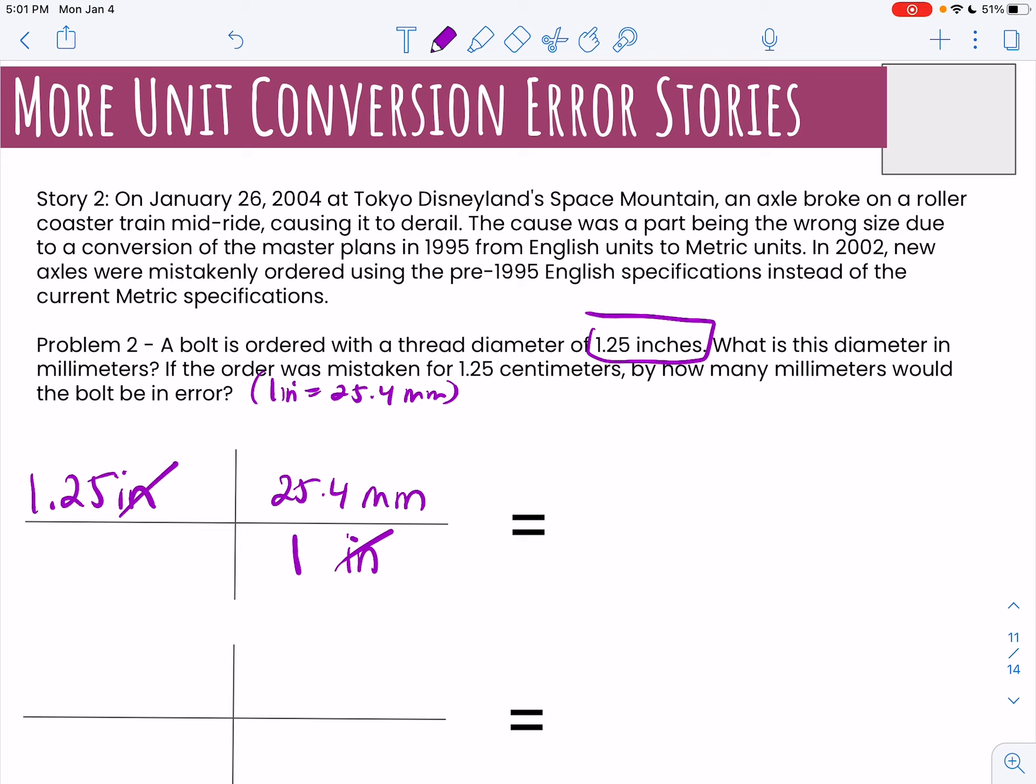And then 25.4 millimeters on the top, and then those units are going to cancel. So 1.25 times 25.4, so they really were getting a part of 31.75 millimeters.